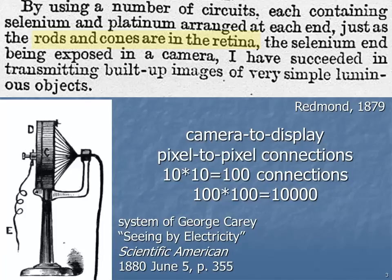But we have many, many more rods and cones than photosites in his system. We don't know what the original resolution was, but the system he got to work had a connection from each camera pixel to a corresponding display pixel. So if he had only a 10 by 10 array of pixels, that would be 100 individual connections. For a 100 by 100 array, it would be 10,000 individual connections. The image shown here is from another inventor, George Carey, and he too tried a pixel-to-pixel connection.